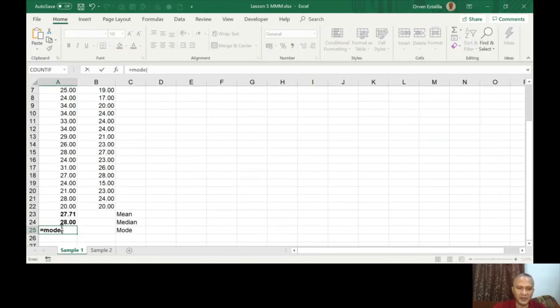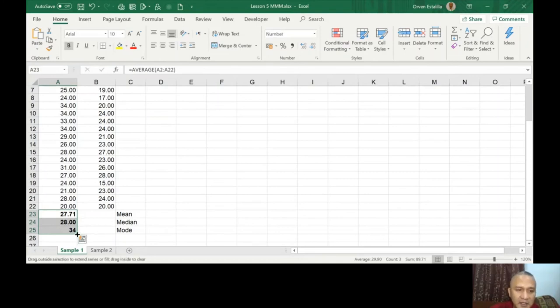So the last is mode. We have a function called mode and again A2 to A22. Press enter. So this is easy. If you want to apply that, I will not type it again. I'm just going to copy it here. And voila, we have the answer.